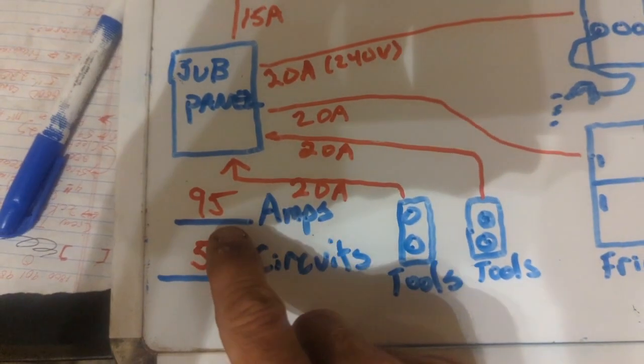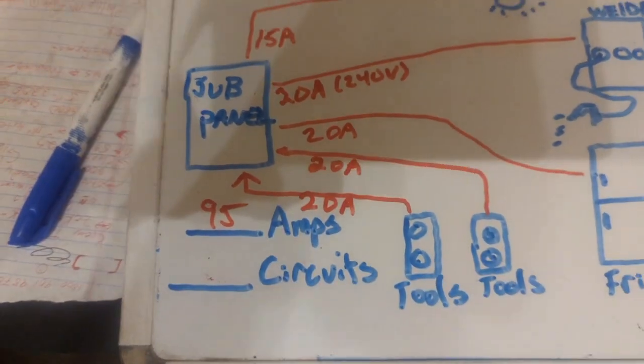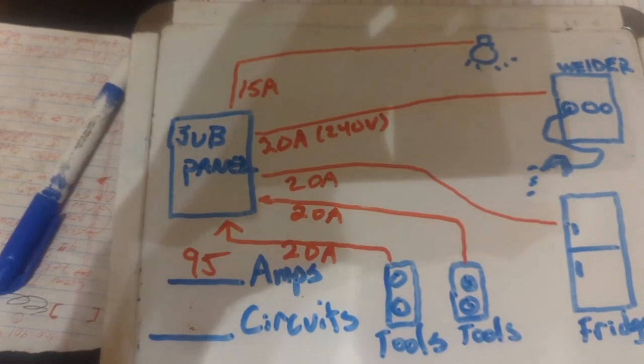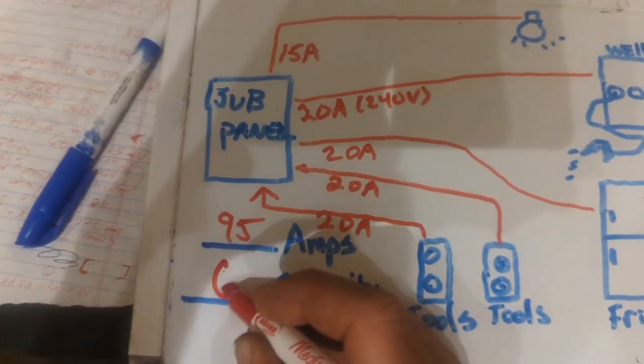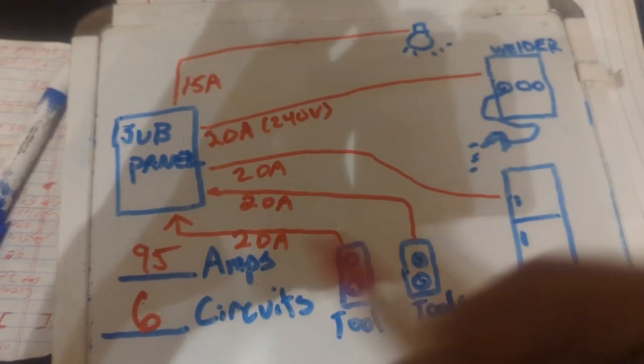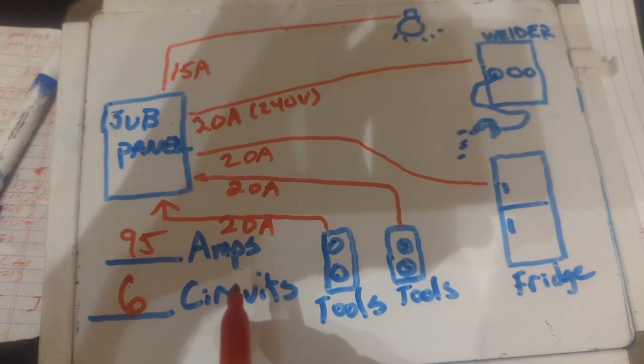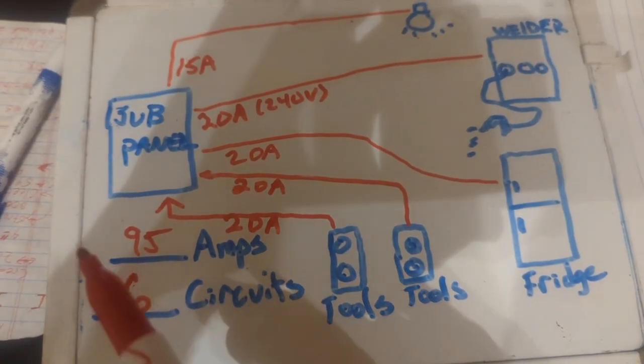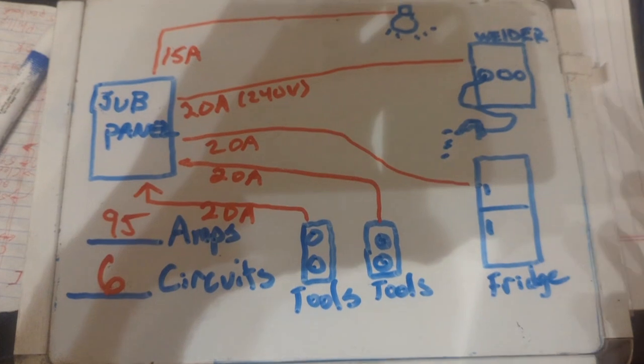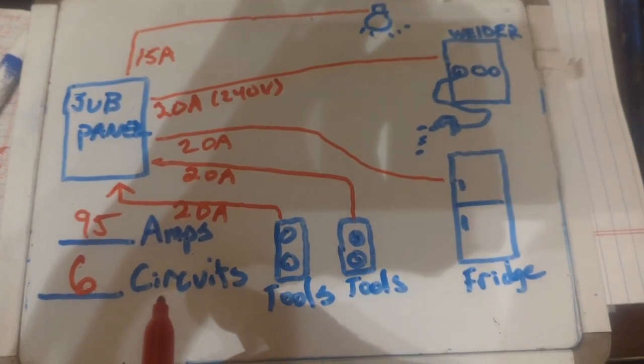So in this situation here, this is going to become a six. And so I'm going to need a sub panel with at least 95 amp capacity, and I'm going to need six slots for my breakers. So that's the bare minimum. So in some situation like this, I would be getting a hundred amp box and make sure that I have a minimum of six circuits, preferably eight because you might want a couple of spares in there.